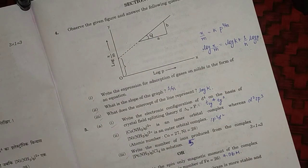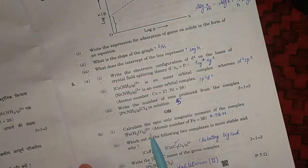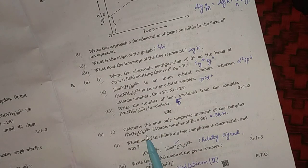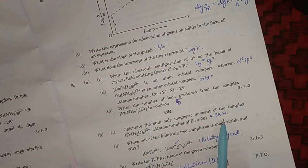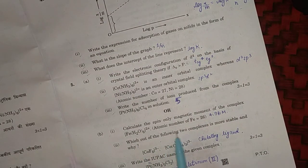Or question: calculate the spin only magnetic moment of the complex [Fe(H2O)6]2+. There will be 4 unpaired electrons, so magnetic moment will come out to be 4.9 Bohr magneton.